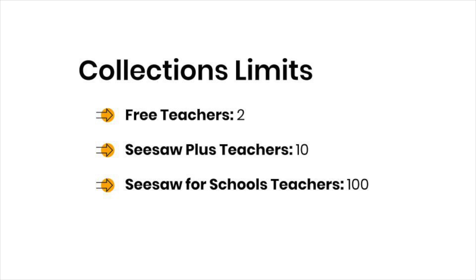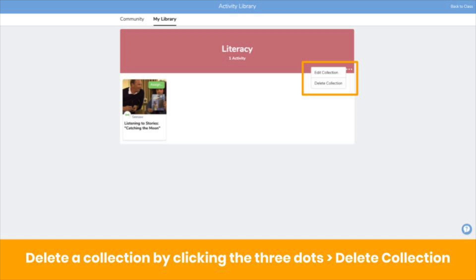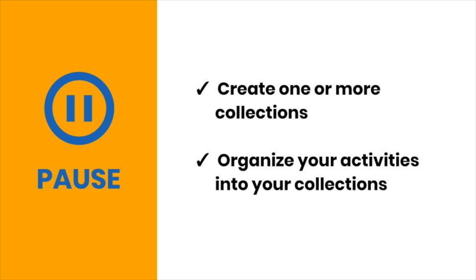Keep in mind there are some limits. If you need to delete a collection, click on the collection, click the three dots, then click Delete. Don't worry — this will not delete the activities in the collection. One question we get a lot is: can I organize activities in the Activities tab after I assign them? Not at this time. Collections are only to help organize My Library. When you assign activities, they'll show in the order you assign them, with the most recent on top. Pause the video now, create one or more collections, organize your activities, and give yourself a big high five for being an organizational superstar.